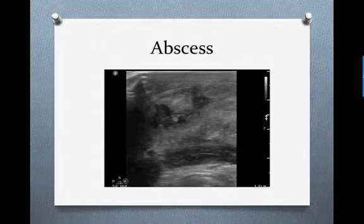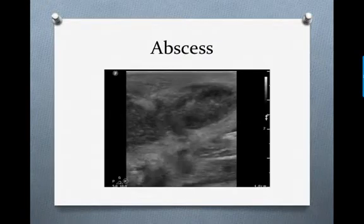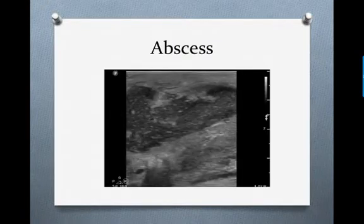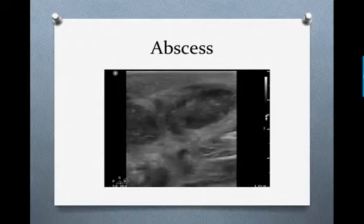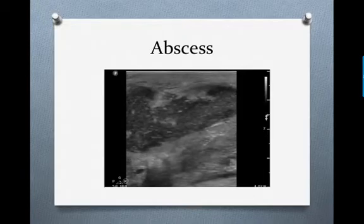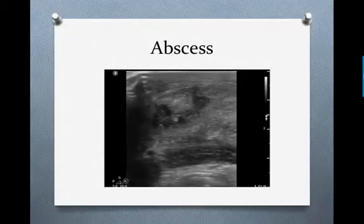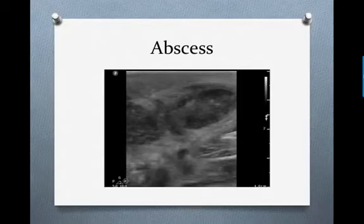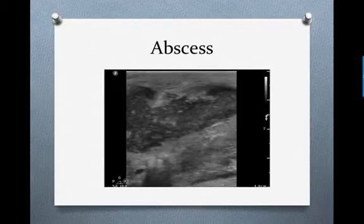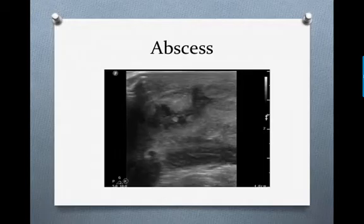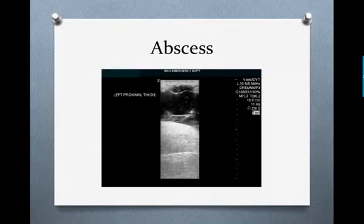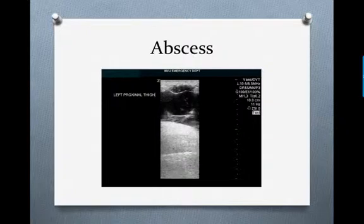This is the appearance of an abscess. You can see a complex fluid collection with very irregular borders. Here's another example of an abscess — this is called pusostalsis, where you can see the pus swirling around within the abscess itself.